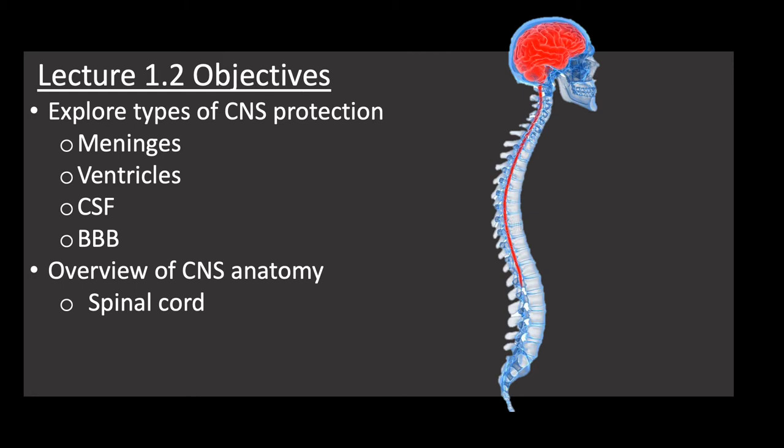Following a really brief, broad introduction to the CNS, your lecture objectives for today are going to include exploring the types of protection that exist for the central nervous system. These are going to include the meninges — just some protective layers — the ventricles, which allow the brain to float atop a cushion, the cerebrospinal fluid or CSF that provides that flotation, and then the blood-brain barrier, a selective barrier you've probably heard about in relation to some pharmaceuticals. And then we'll finish up with a broad overview of spinal cord anatomy.